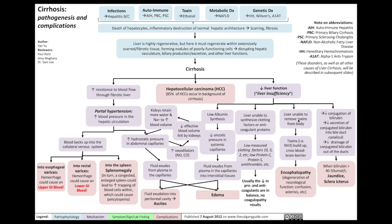Third, liver insufficiency results in the liver being unable to remove toxins from the body. These toxins, such as ammonia, can build up in the bloodstream, cross the blood-brain barrier, and lead to encephalopathy — otherwise known as hepatic encephalopathy — a degeneration of neurological function involving confusion, asterixis, and other neurological symptoms.